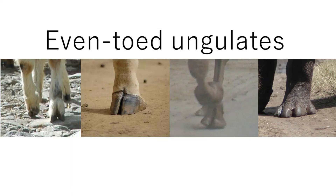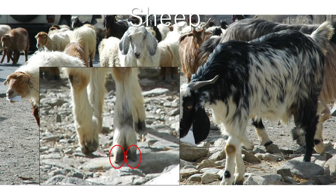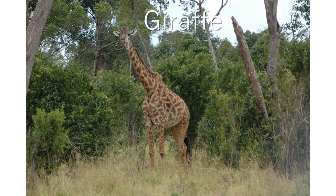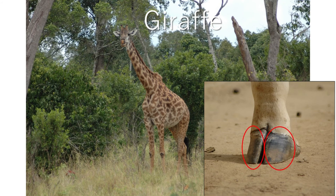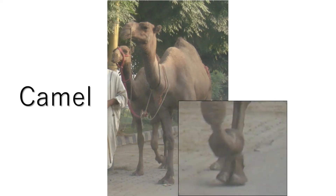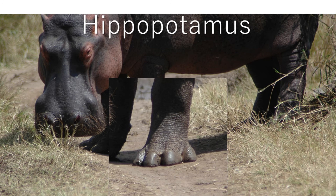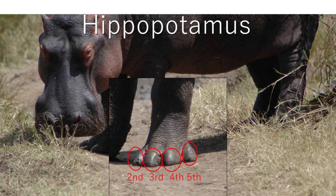Let's look at other even-toed ungulates. All of them bear their weight on even-numbered toes. Next: sheep, giraffe, camel. Hippopotamuses have four weight-bearing toes.